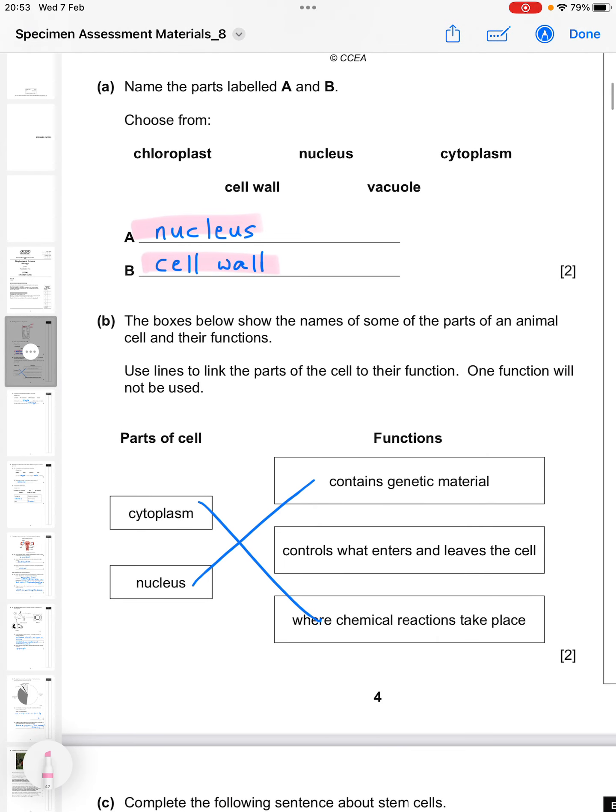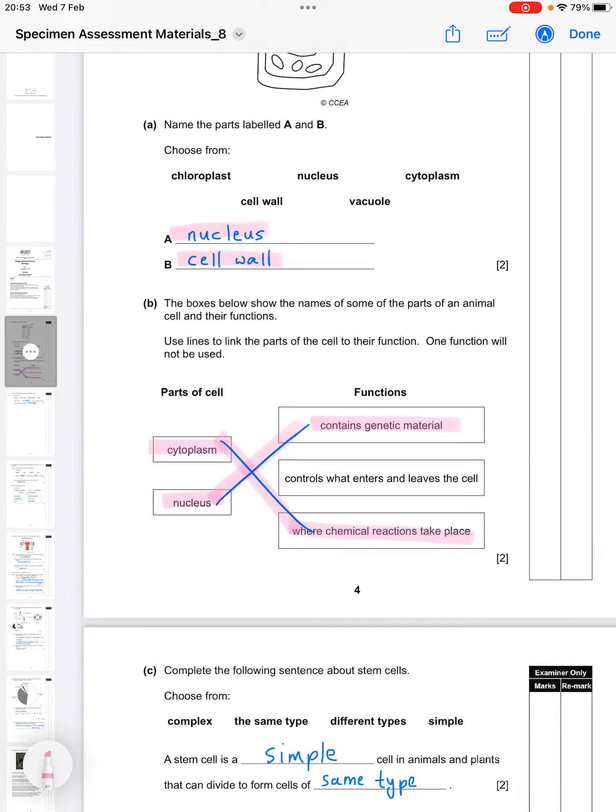So B, the boxes below show the names of some parts of an animal cell and their functions. Use lines to link the parts of the cell to their function. One function will not be used. So the two words are cytoplasm and nucleus, and the choices for the functions are contains genetic material, controls what enters and leaves the cell, or where chemical reactions take place. So the cytoplasm has to link to where chemical reactions take place, and then nucleus contains the genetic material. So you just link them by drawing the lines, as you see there.